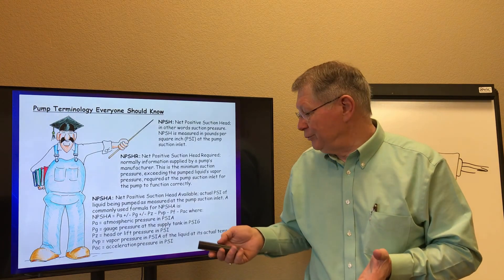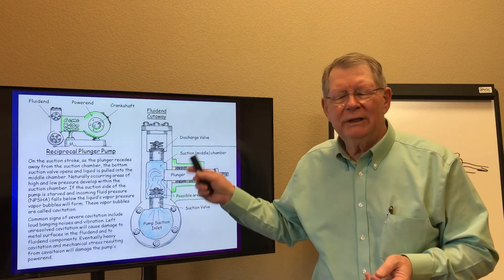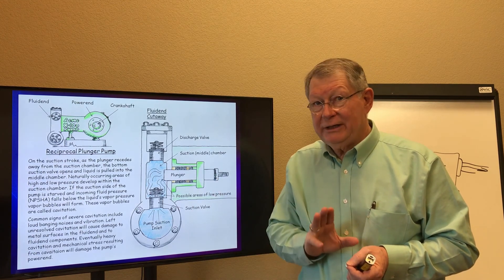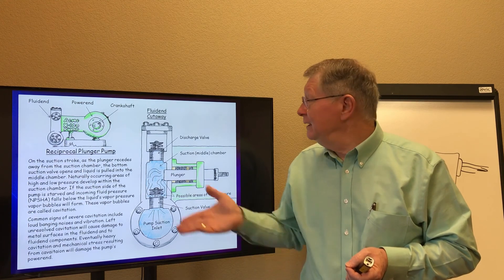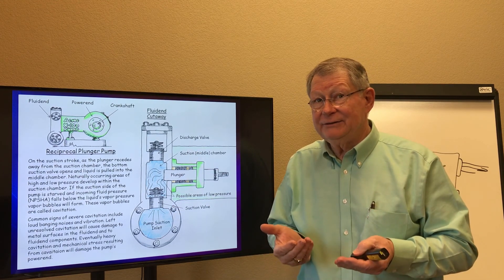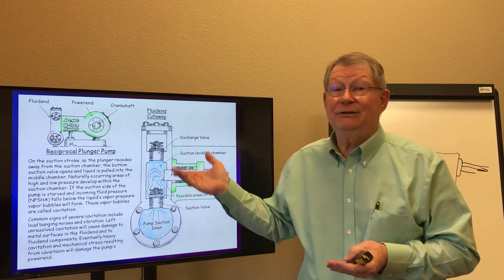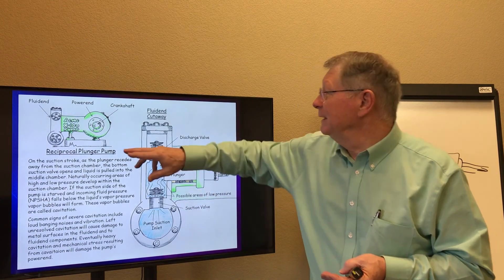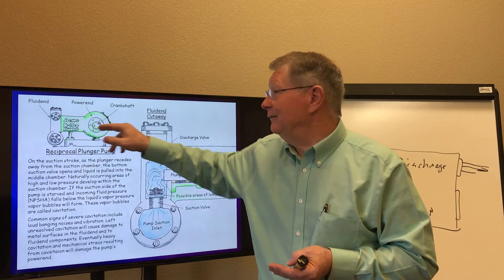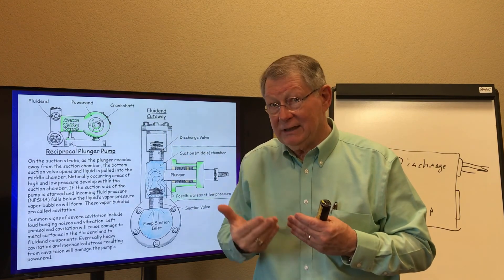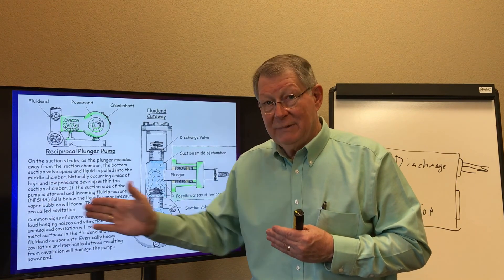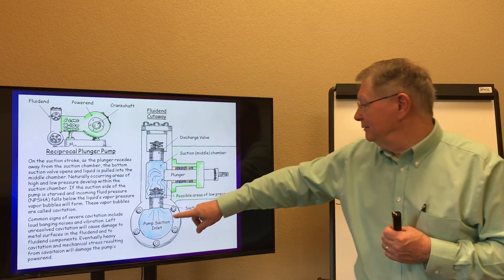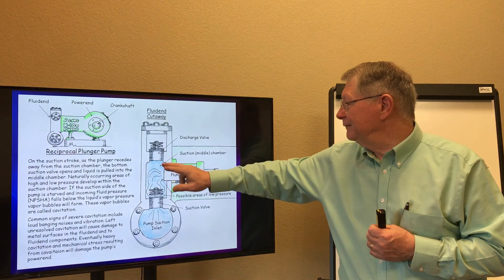Atmospheric pressure relates directly to vapor pressure. This illustration is available for download on our website at Triangle Pump Components Inc — a coloring book covering all of these principles. Here we have a cross-section of a reciprocal plunger pump, which has a fluid end and a power end. The power end has a crankshaft — much like a car's crankshaft — that moves a plunger back and forth. We have a discharge valve, a suction valve, the suction inlet, and the suction chamber.